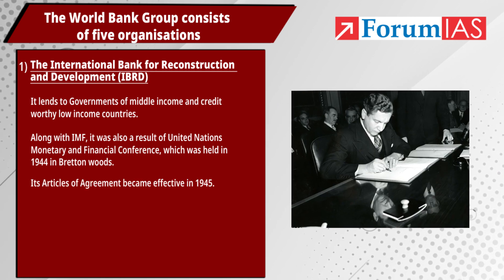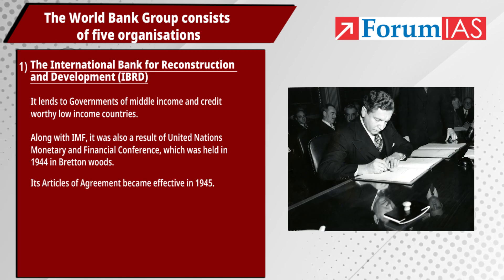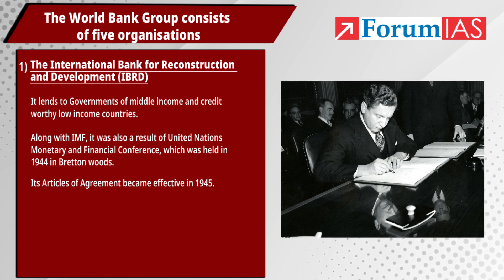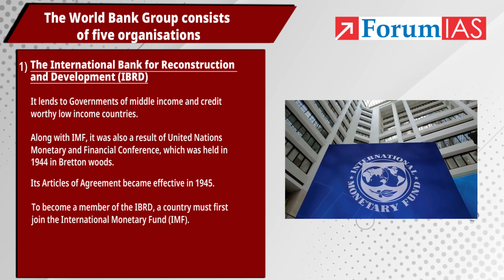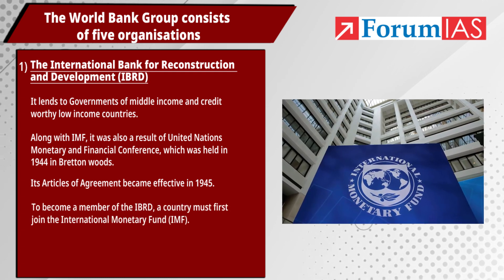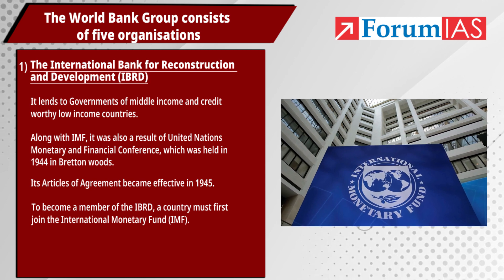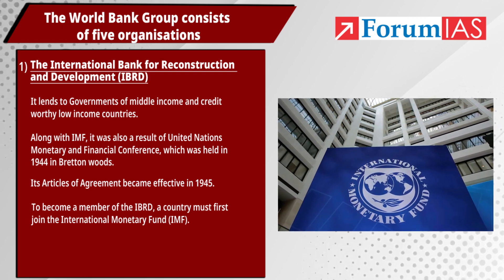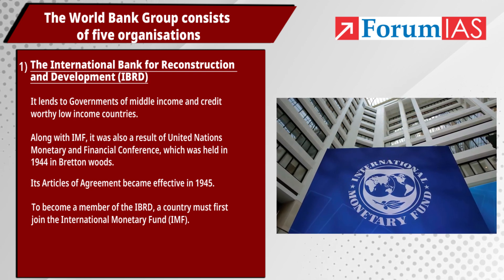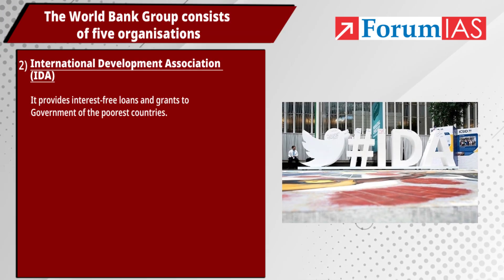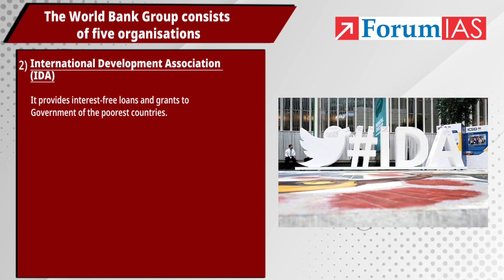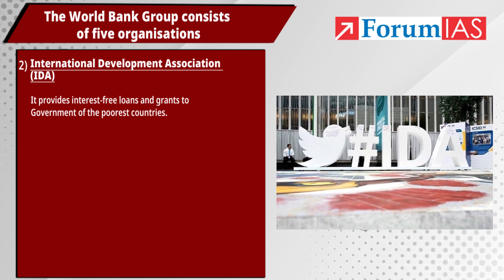Its Articles of Agreement became effective in 1945. To become a member of the IBRD, a country must first join the International Monetary Fund. The second organization is the International Development Association (IDA), which provides interest-free loans and grants to governments of the poorest countries.